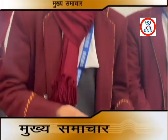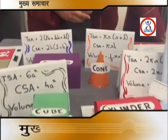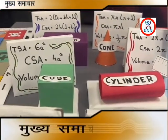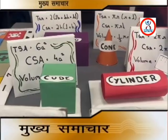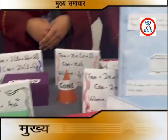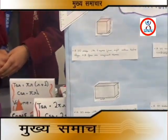This is a model about surface area and volume. We have written a poem covering the formulas for surface area, curved surface area, and volume. When students come, they can ask for the derivation and we can give them the explanation.